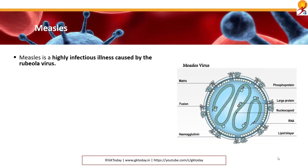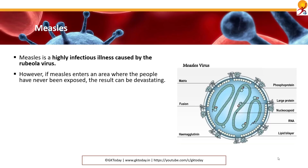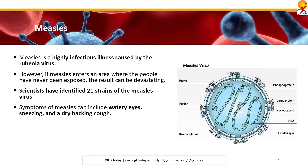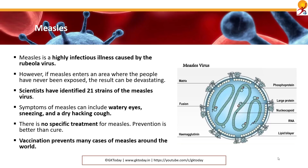Measles is a highly infectious illness caused by the rubeola virus. If measles enters an area where people have not been exposed beforehand, the result can be devastating. Once infected, your body creates antibodies which can fight measles in the future. Scientists have identified 21 strains of measles virus so far. Symptoms can include watery eyes, sneezing and a dry hacking cough. There is no special treatment for measles — prevention is better than cure, so we have vaccination which prevents measles around the world.